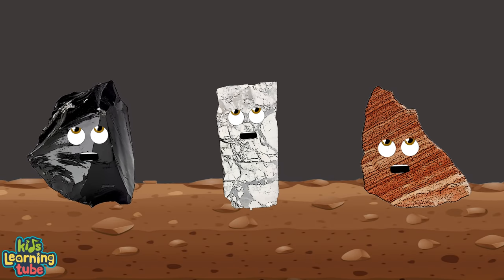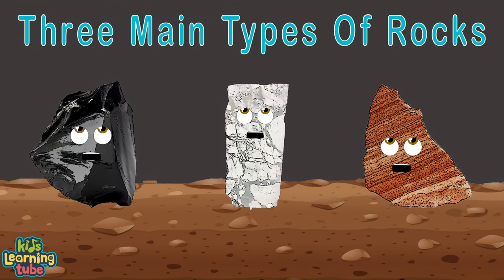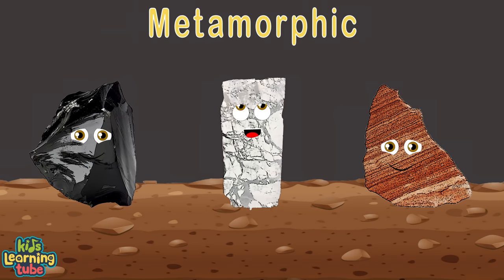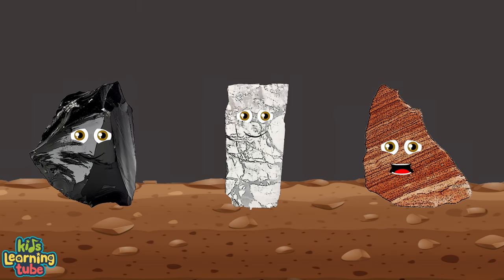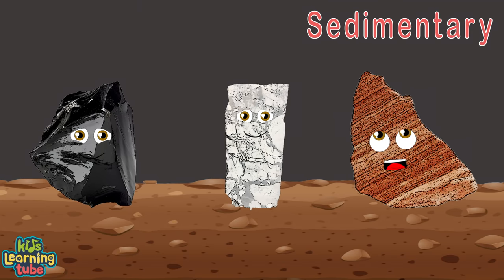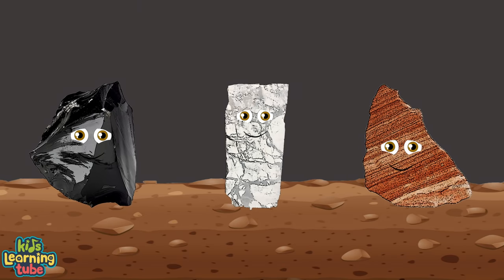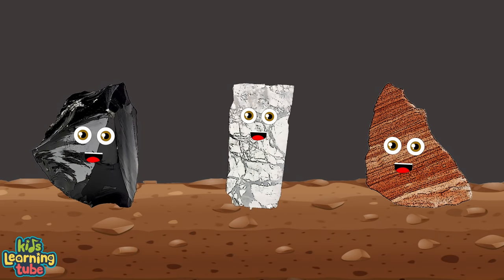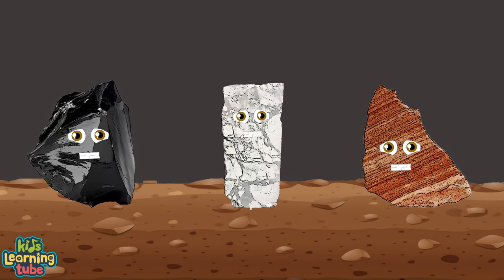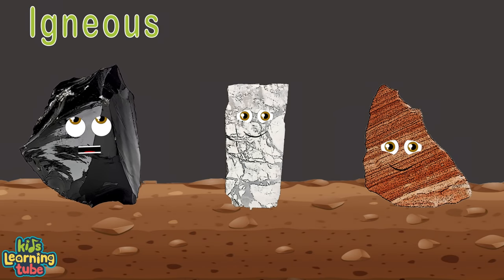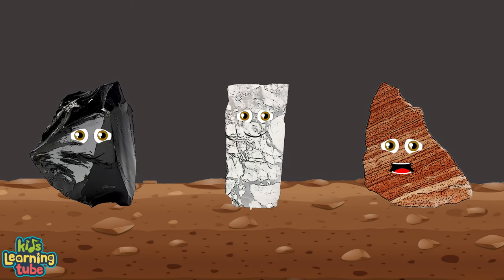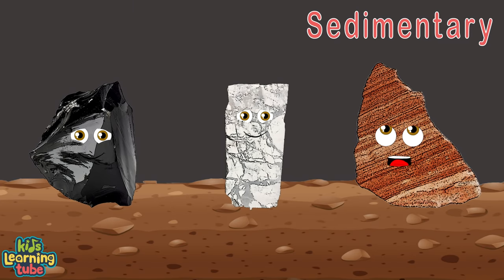There are three kinds of rocks on Earth you will see: igneous, metamorphic, and sedimentary. Our world is full of these rocks on land and in the sea. Igneous, metamorphic, and sedimentary.